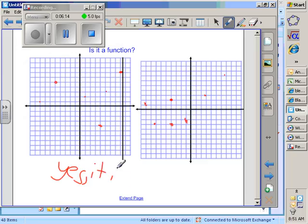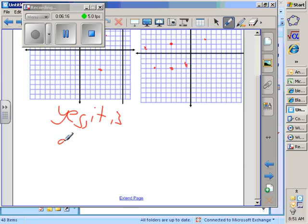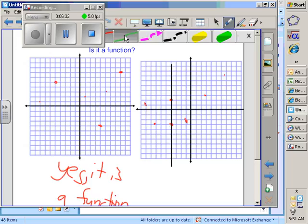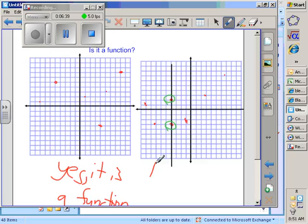It is a function. Next problem, start checking it, take my vertical line, start going across. I'm okay, I'm okay. I am NOT okay right here is a problem. So I fail the vertical line test. No, it is not a function.